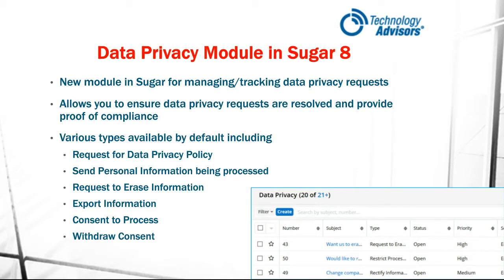Many of the new GDPR-related features in SUGAR are managed through a new module called Data Privacy. The Data Privacy module is designed to help you manage and track your data privacy-related requests. As people request an export of their data, or to know what information you have about them, or to have data erased, this gives you a place to manage those requests and make sure you're keeping track of them. It also gives you a place to track that you have followed through on those requests, going back to that accountability requirement, noting when the request was completed and the actions you took.